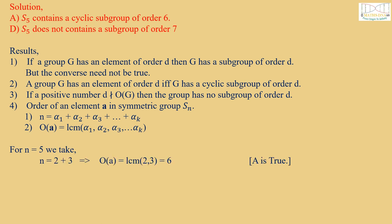For n equals 5 we take n equals 2 plus 3, which implies order of a is equal to LCM of 2 and 3, which equals 6. And from results 2 and 1 we get A is true.